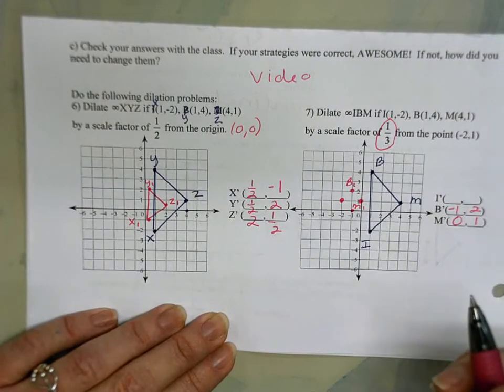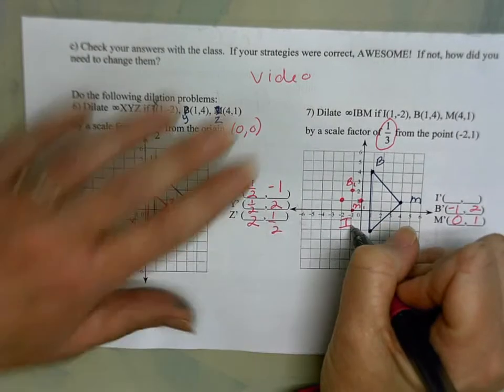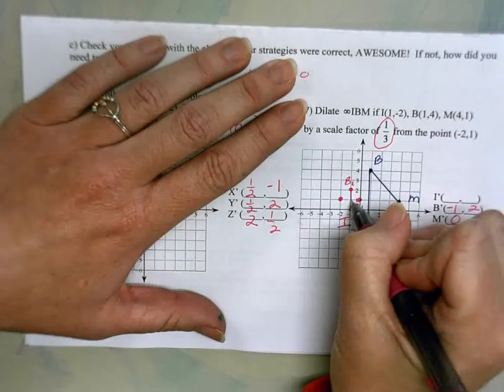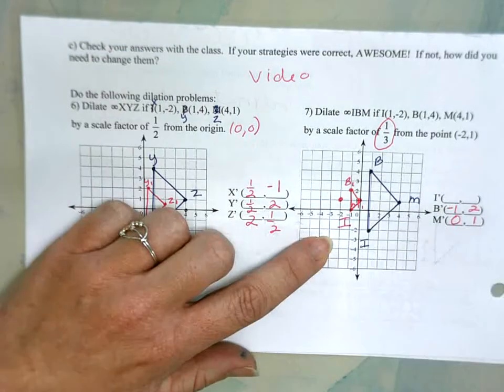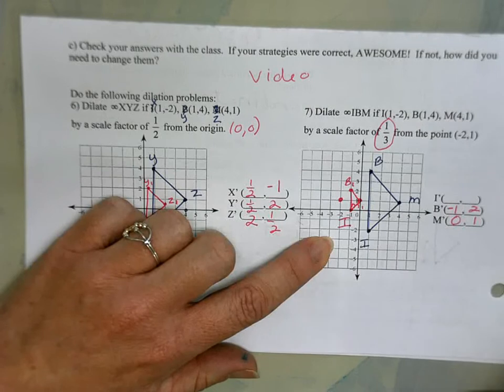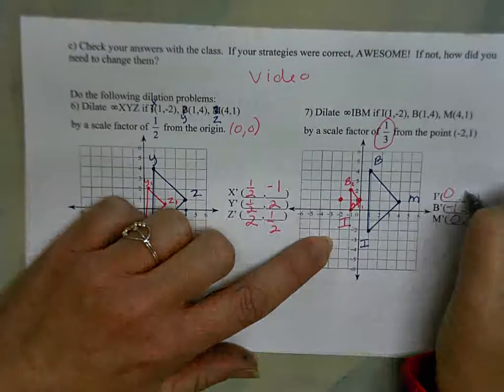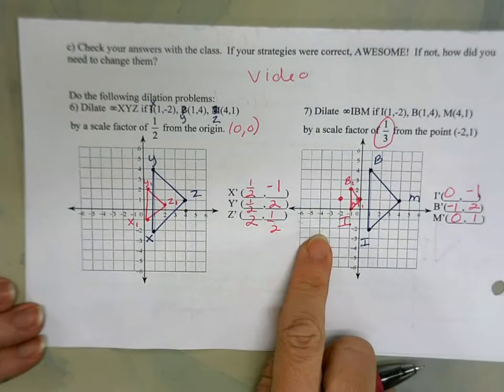Very good. And then we're going to connect our teeny tiny points. My new coordinate for I again was (0,-1). And again there is my similar shape by one third of the original dilated.